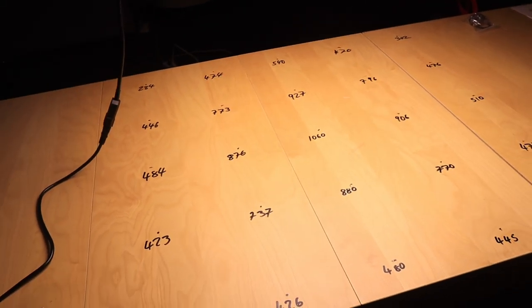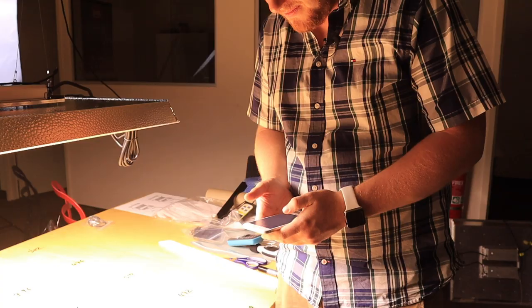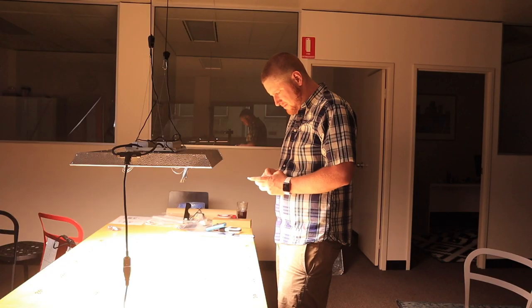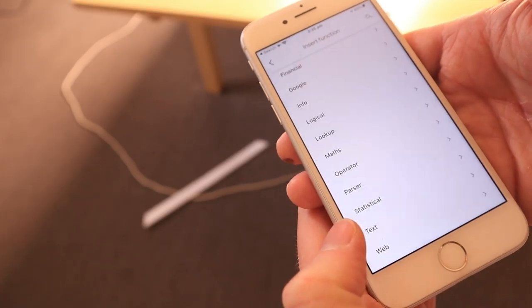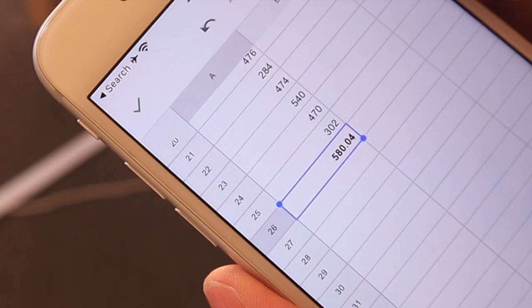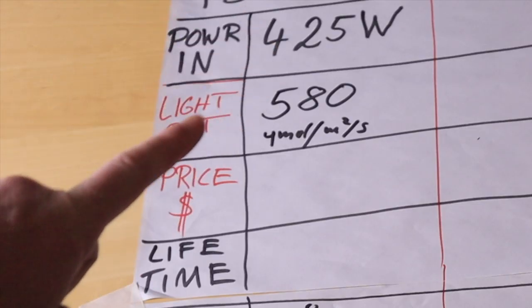I have measured the intensity in 25 different spots. Now I want the average of all of these. I am creating a spreadsheet and I am typing all of these values in there. 580 micromole per square meter per second on average. And I have added that into our scoreboard.